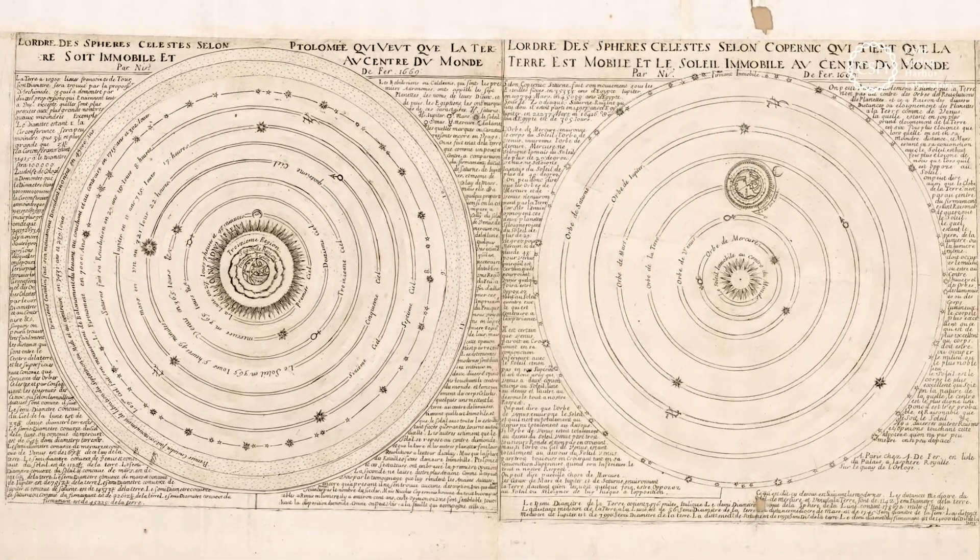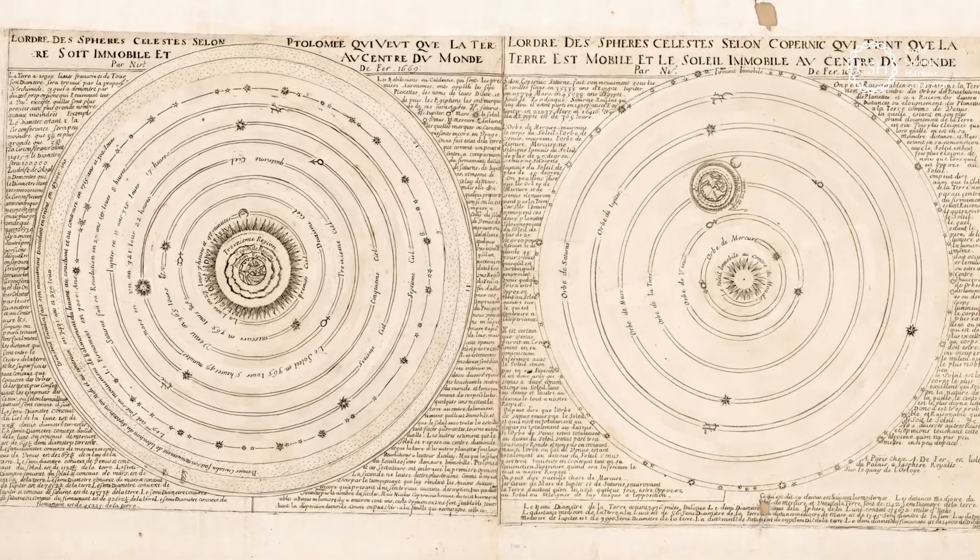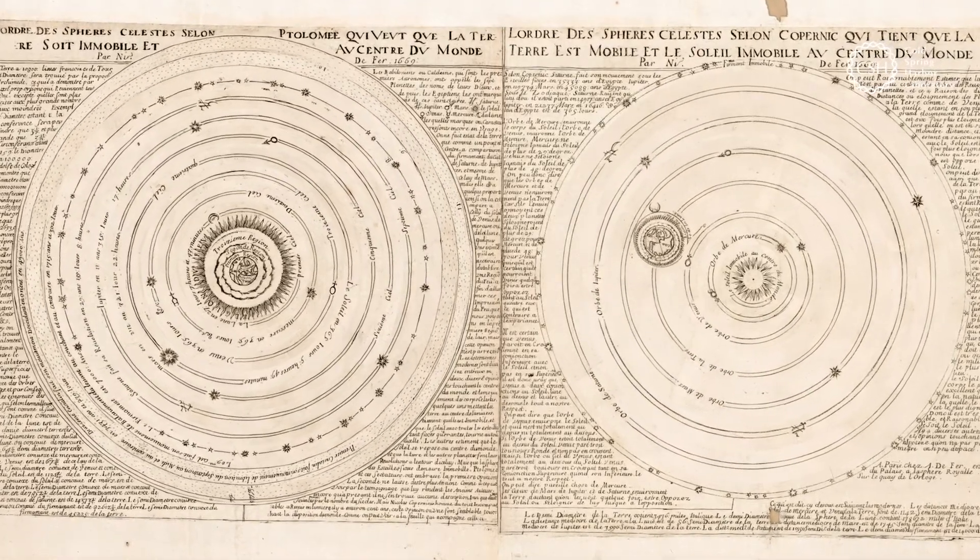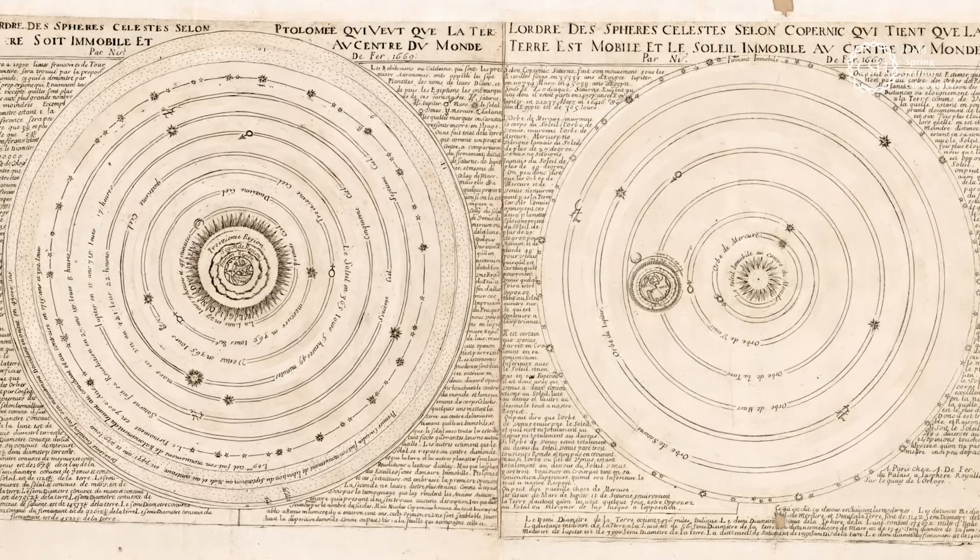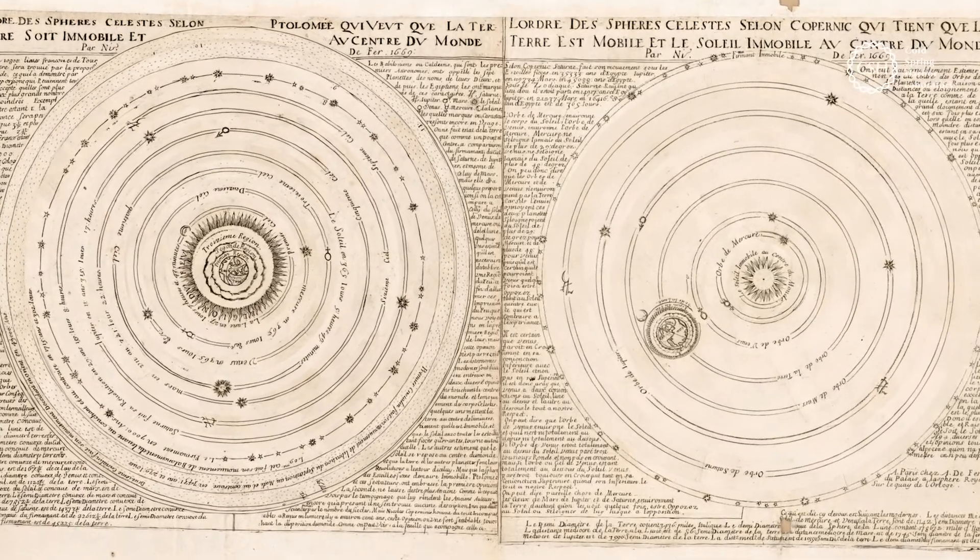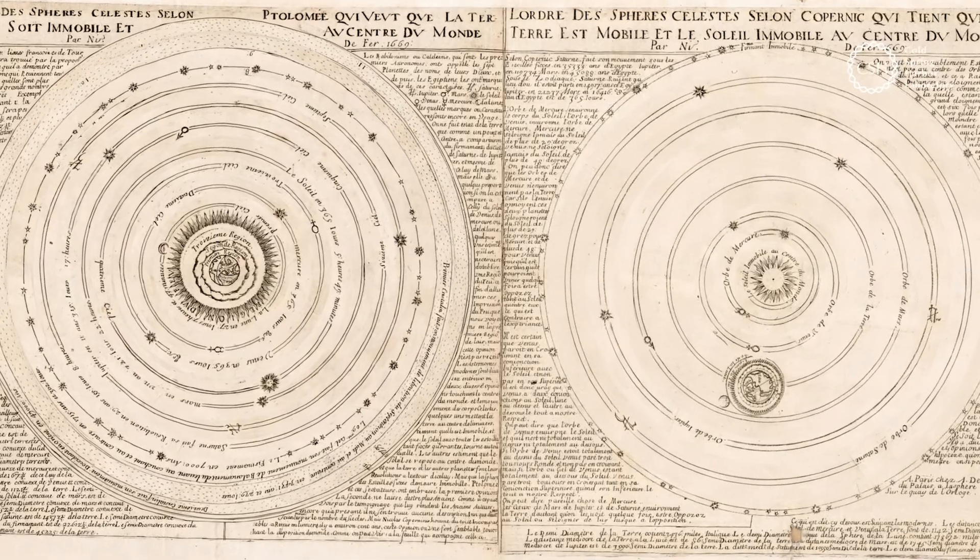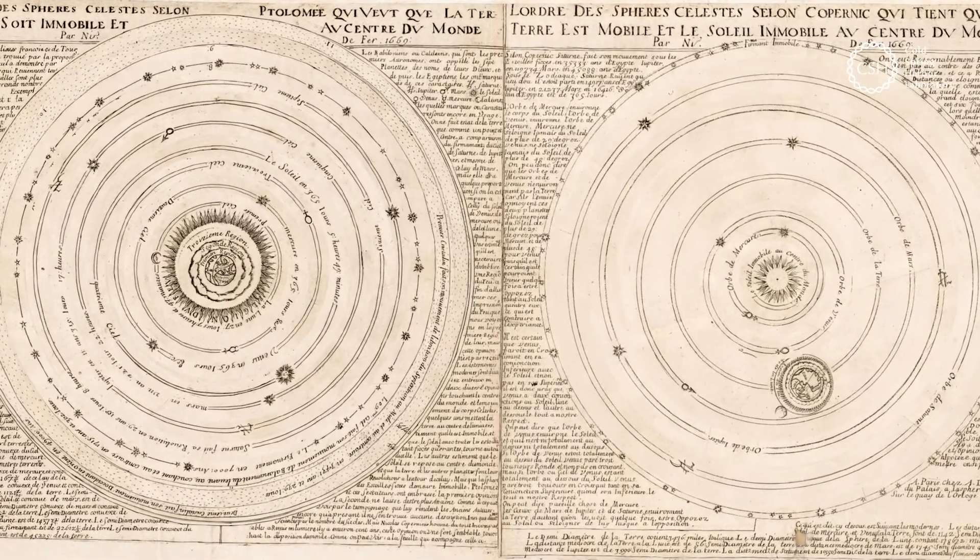There were little details added to those models to make them very accurate predictions of the movement of celestial bodies. Both of them were so successful in predicting these celestial body movements that for a long time it was actually very difficult to say which of the models is more correct.